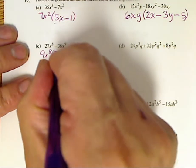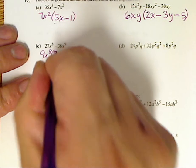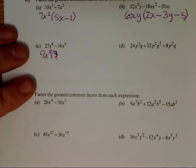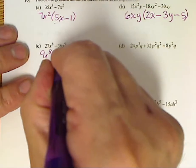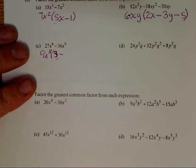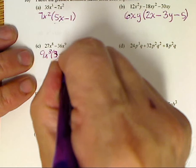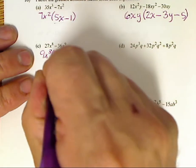That leaves me with 9 times 3. Oops, my 3 was a little messy. And then I have x to the 8th, so I'm needing more x's. Minus, to get 36, is 9 times 4. And then I need an x.